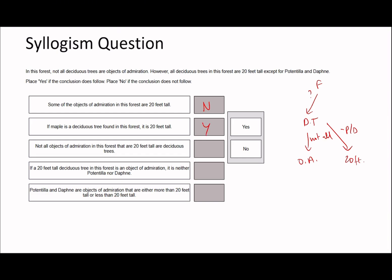'If maple is a deciduous tree found in this forest, it is 20 feet tall' — yes, because we know all deciduous trees in this forest apart from daphne and potentilla are 20 feet tall. 'Not all objects of admiration in the forest that are 20 feet tall are deciduous trees' — there's simply not enough information. It could be that all the 20-feet-tall ones are the deciduous trees, but we don't know enough about other types of trees. I can create a hypothetical either way, which is why it's no.